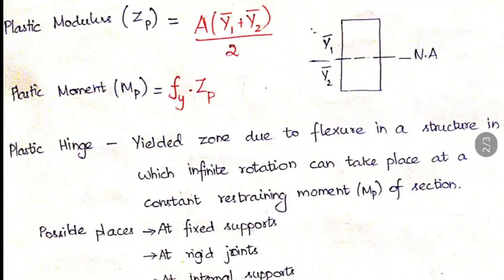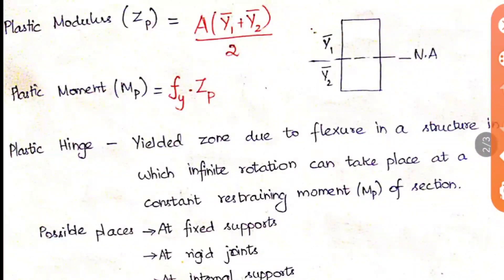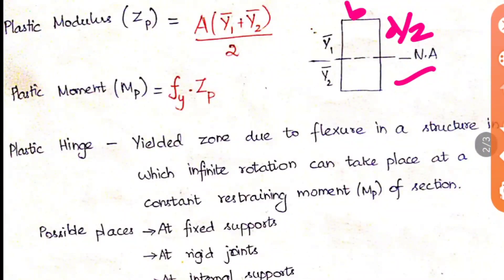Cutting the rectangular section into two parts above and below the neutral axis: for the above part the area is B × D/2, and Y1 is D/2. Similarly, for the region below the neutral axis, it is also B × D/2, with Y2 equal to D/2. So you get B × D/2 × D/2, giving BD²/4.